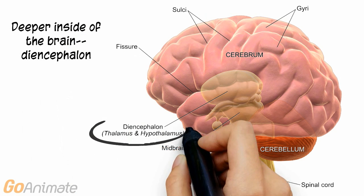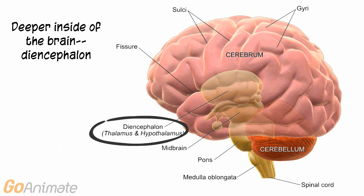Deep to the cerebrum is the diencephalon, which contains the thalamus and hypothalamus.